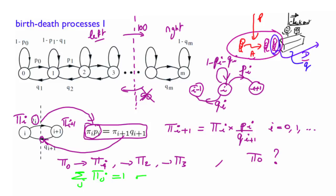How? This can be written pi of 0 plus pi of 1, which is pi of 0 times p0 over q1, plus pi of 2, which is pi of 1 times p1 over q2, pi of 0 times p0 times p1 over q1 times q2, which is pi of 2, plus, etc., equals 1. So this equation allows us to find pi of 0. And then we use this recursion to find pi of 1, pi of 2, pi of 3, etc.